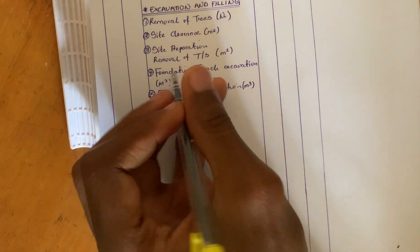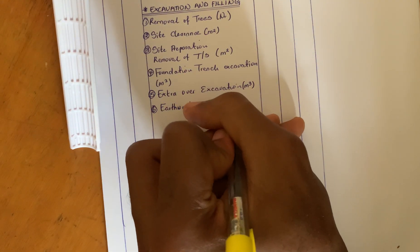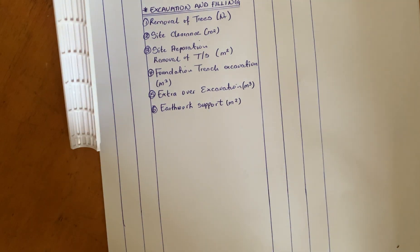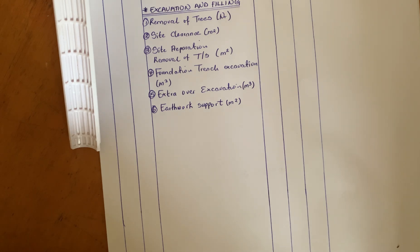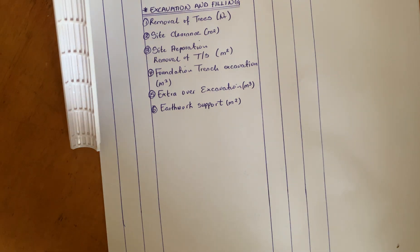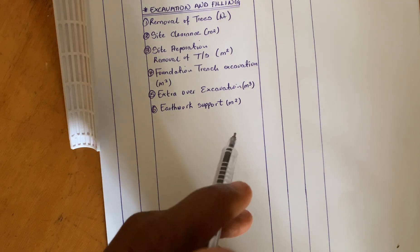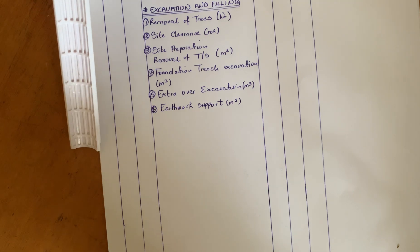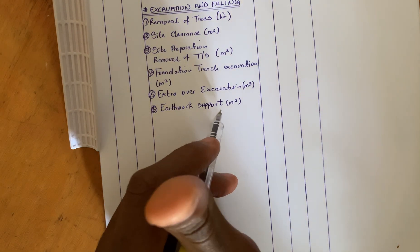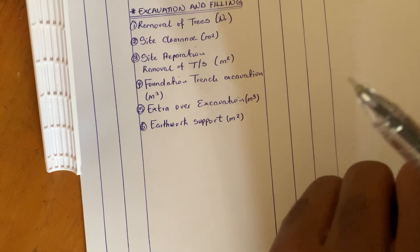Number six would be earthwork supports, and it is measured in meters square. There are times when you excavate your trench for casting your foundation footing and the soil that you dig out from the ground begins to pour back into the hole. What we do to prevent that soil from pouring back is what we call earthwork support.